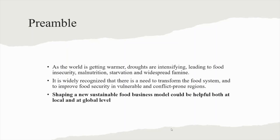Preamble. As the world is getting warmer, droughts are intensifying, leading to food insecurity, malnutrition, starvation and widespread famine. It is widely recognized that there is a need to transform the food system and to improve food security in vulnerable and conflict-prone regions. Shaping a new sustainable food business model could be helpful both at local and at global level.